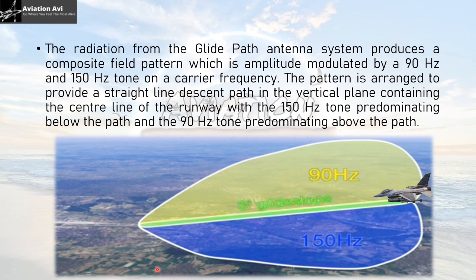If an aircraft is approaching to land on the runway, the 90 Hz slope represents above the glide slope and the 150 Hz slope is below the glide slope. If the pilot is too high on the glide slope, the aircraft instruments will intersect the 90 Hz frequency and the input to the pilot will indicate to come down. Similarly, if the aircraft is coming too low, it will intersect the 150 Hz frequency, indicating it needs to come up to get onto the correct glide slope.